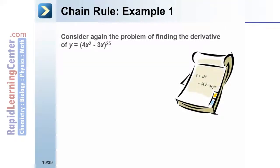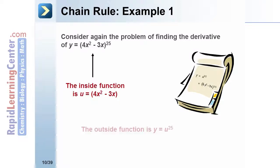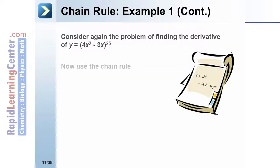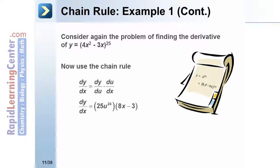Let's look at an example of the chain rule. Consider y equals the quantity 4x squared minus 3x raised to the 25th power. The inside function is 4x squared minus 3x, and the outside function is y equals u to the 25th power. Applying the chain rule, dy/du is 25 times u to the 24th power, while du/dx is 8x minus 3. This simplifies to 25 times the quantity 4x squared minus 3x to the 24th power times 8x minus 3, substituting back in for u to get the final answer in terms of x.